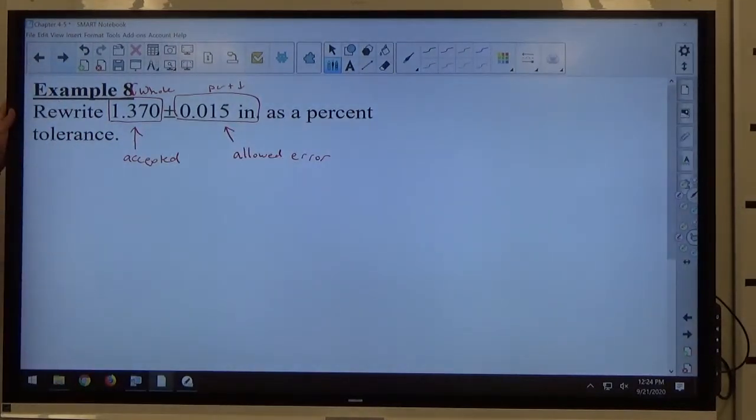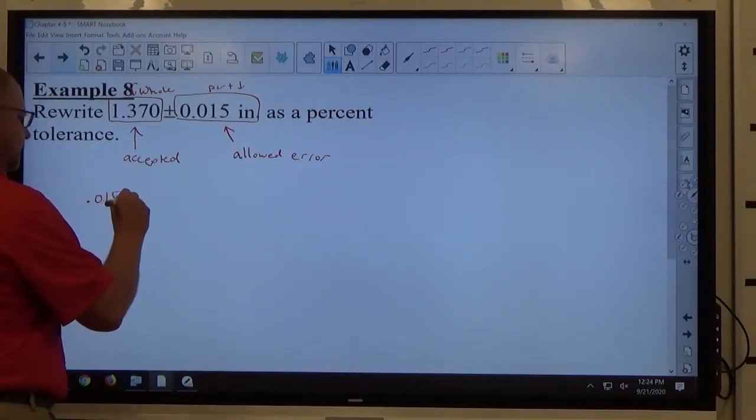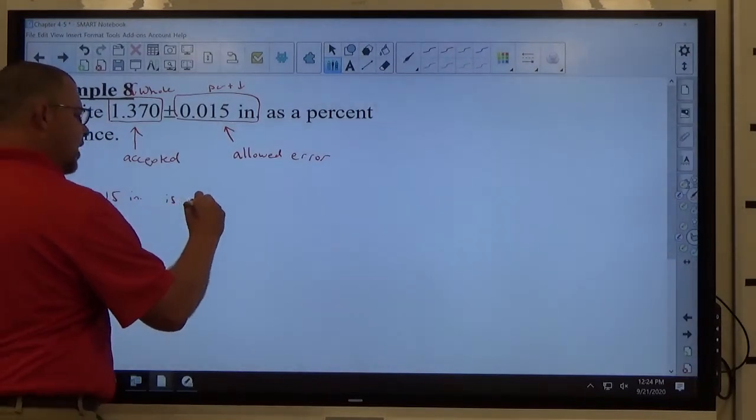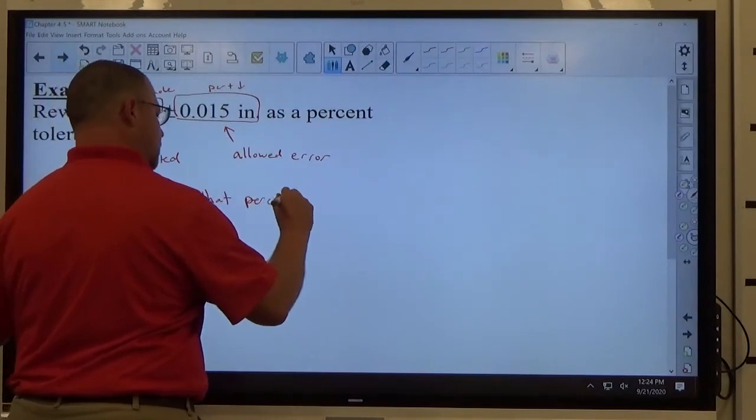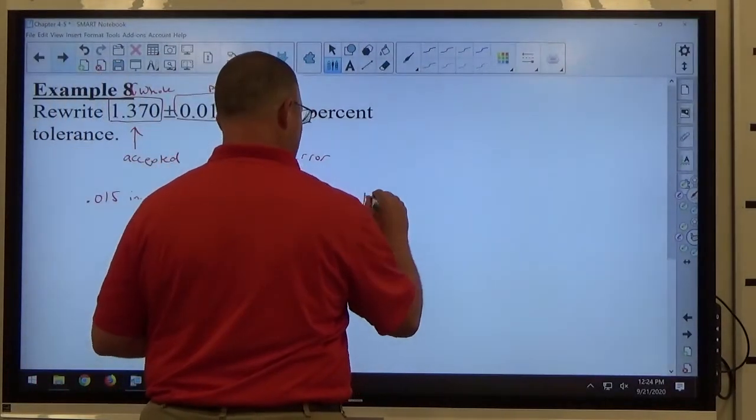It's just another problem that involves what number is what percent of what number. So 0.015 inches is what percent of the whole, which is 1.370 inches.